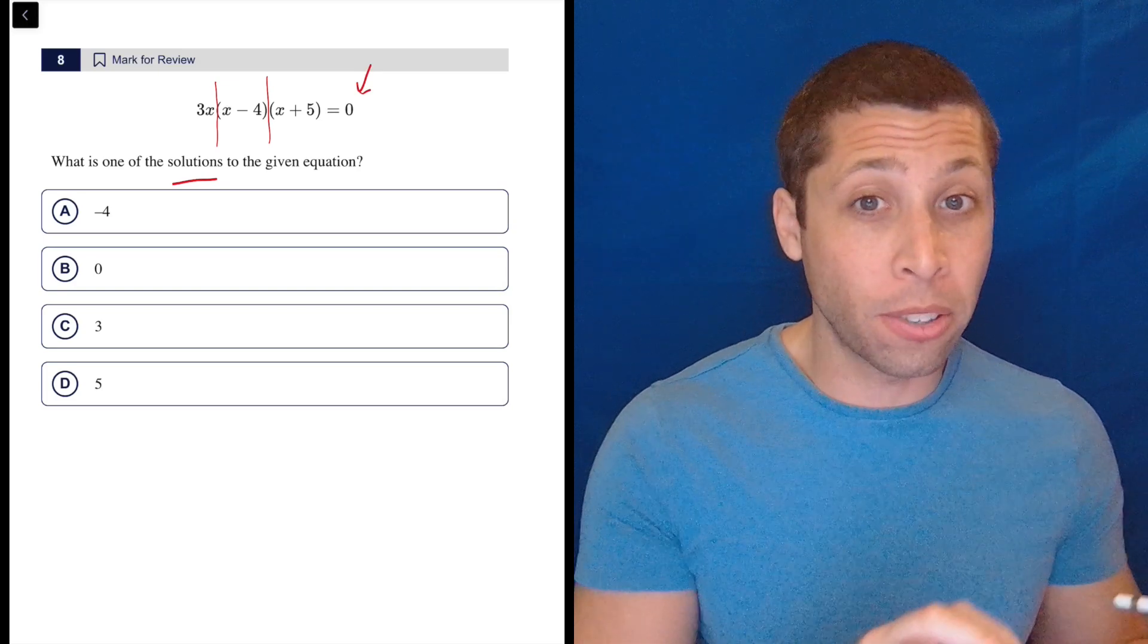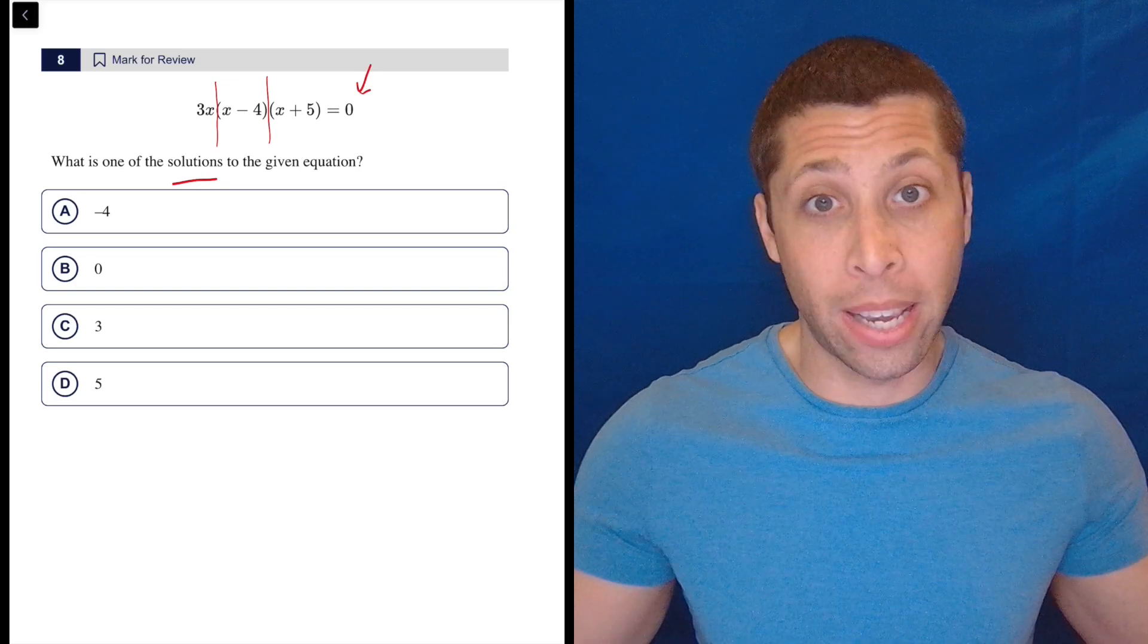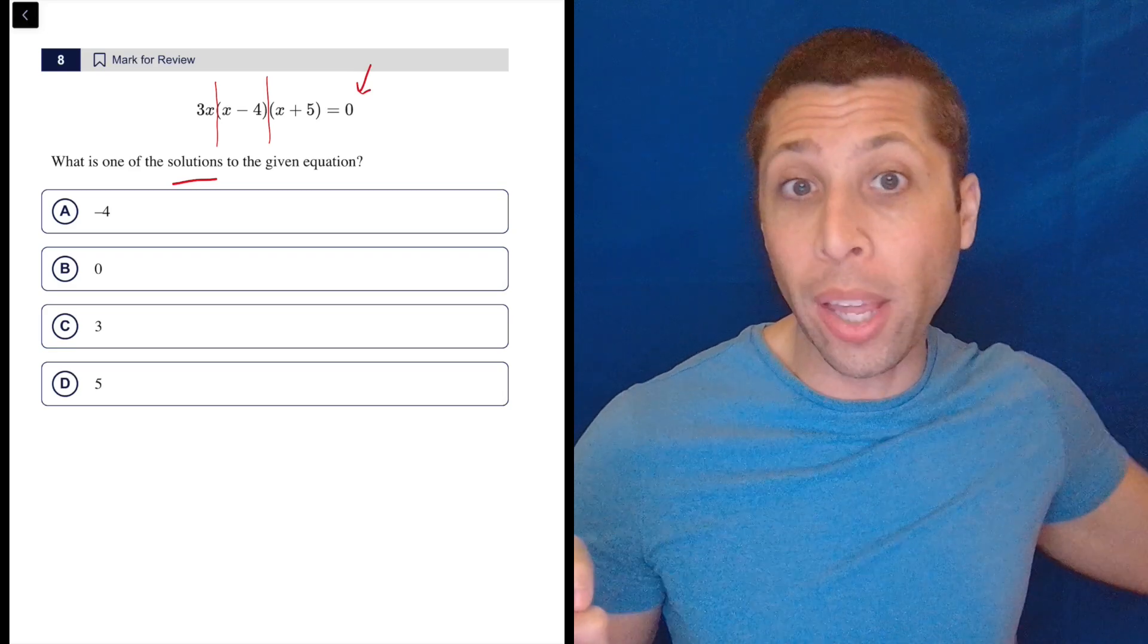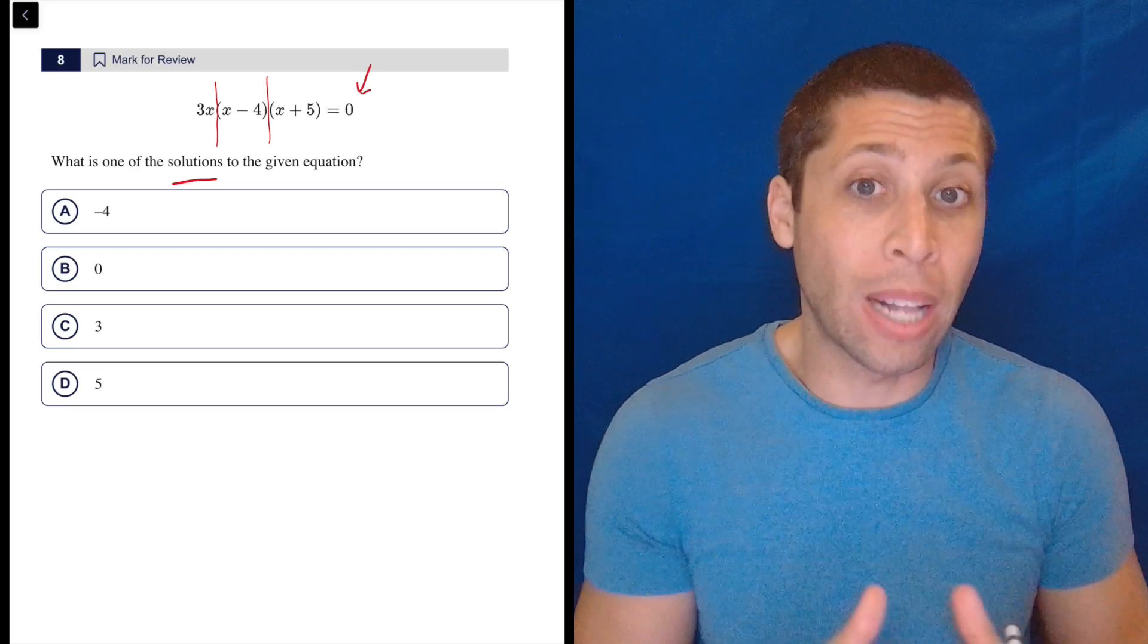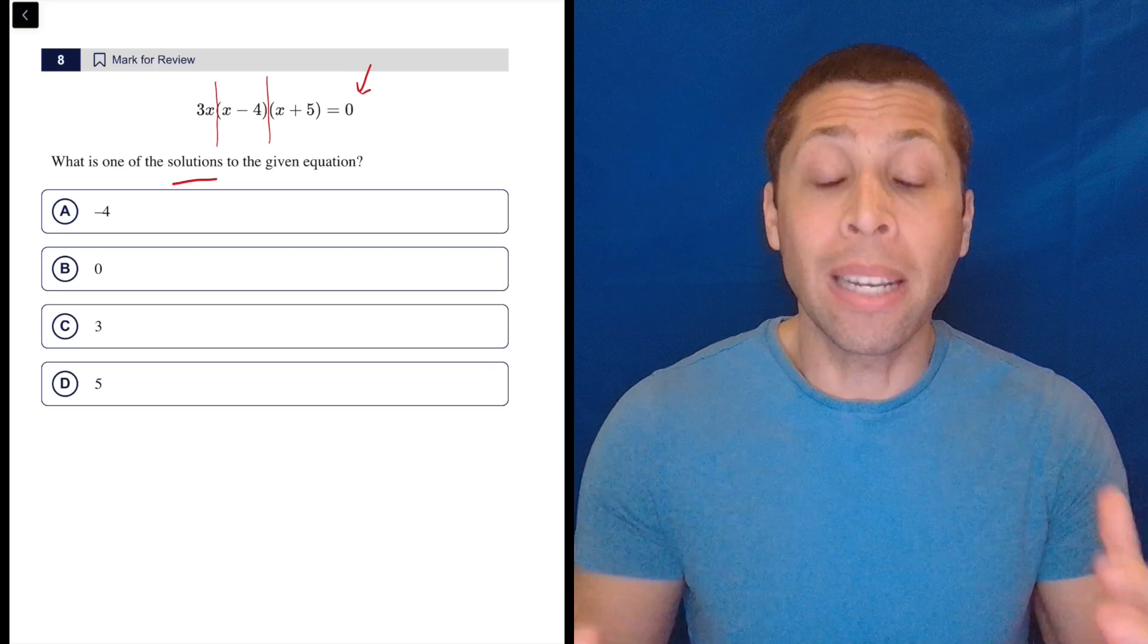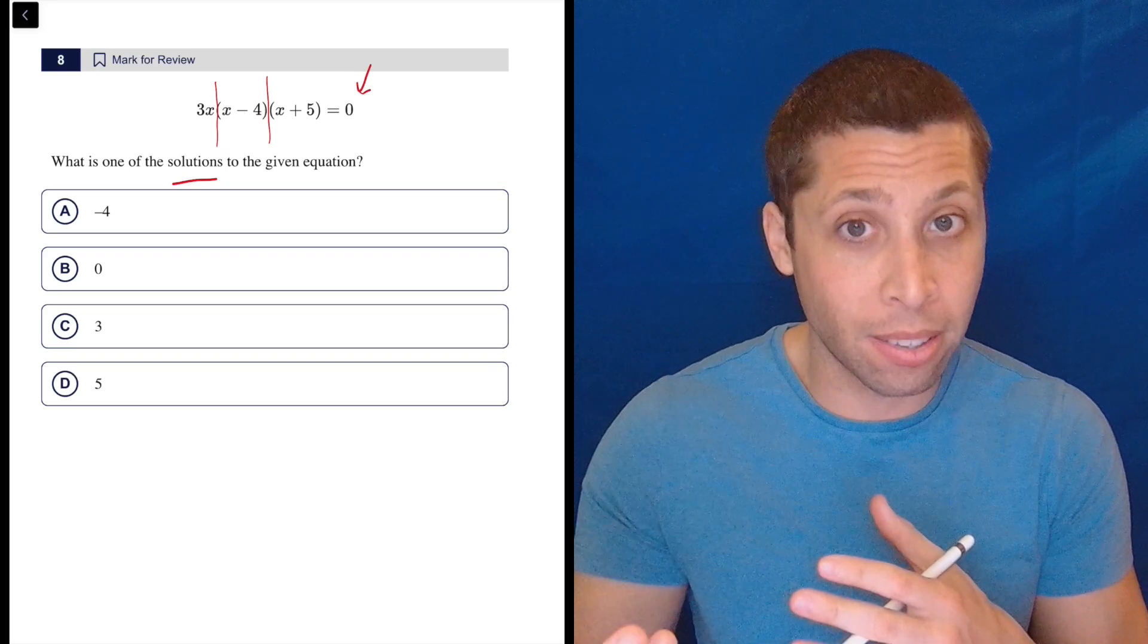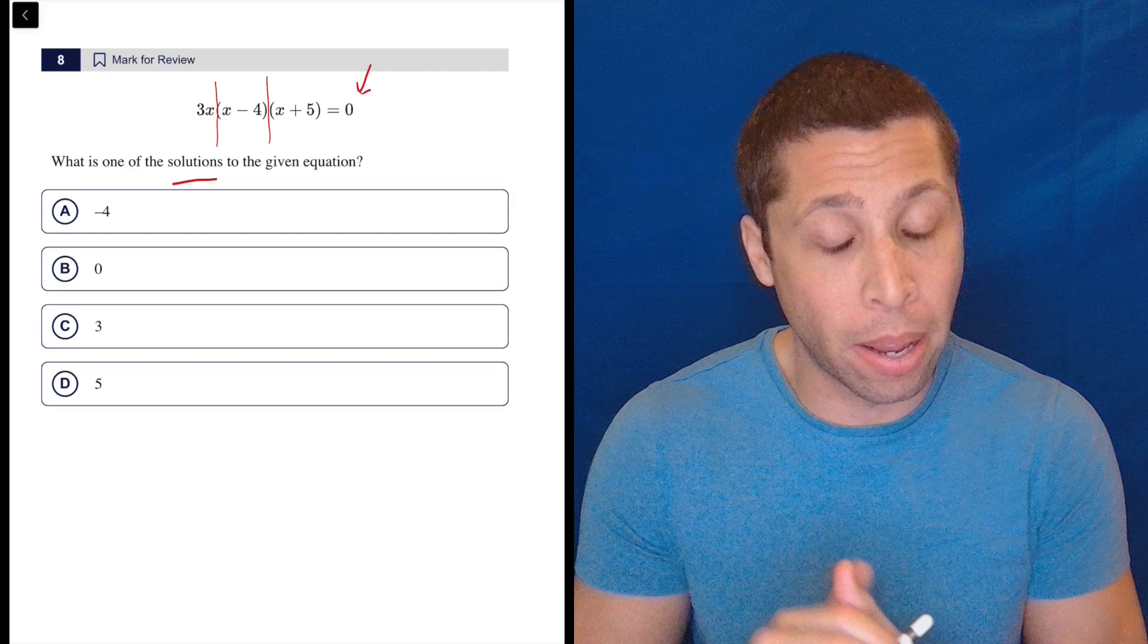Because if any one of those three parts is equal to zero and we're multiplying everything, then throw a zero into any multiplication problem and the whole thing gets wiped out as a zero. So that's what's being tested here. And that is just a fundamental piece of algebra, specifically when we start working into more advanced things like quadratics and bigger than that.